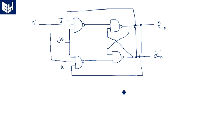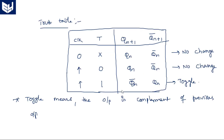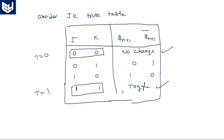The T flip-flop is formed by short-circuiting the inputs of a JK flip-flop. In this logic diagram, J and K are short-circuited together and connected to T. This means it works for only two conditions of the JK flip-flop: when both are zeros and when both are ones. When both are zeros the output is no change, and when both are ones the output is the toggled state.